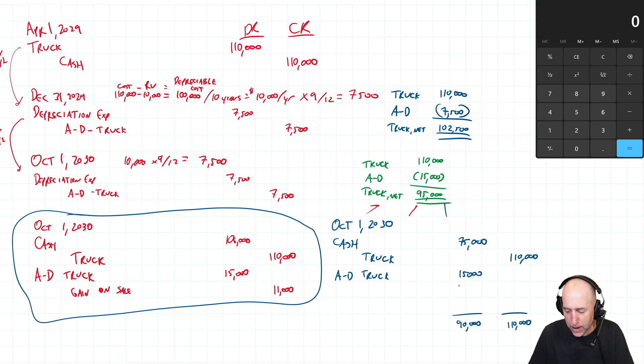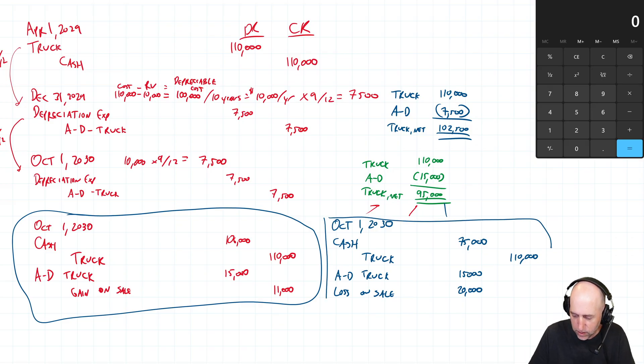I need $20,000 more on the debit side to make this balance, and we debit Loss on Sale. It can be called Loss on Disposal also. Now we got $110,000 in debits, $110,000 in credits, so this thing balances. This was part B. Just to reiterate what's going on here with this Loss on Sale account, it is an other expense. It's an expense but it's not considered an operating expense.